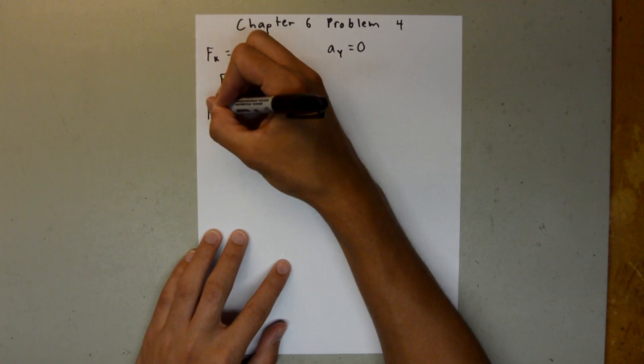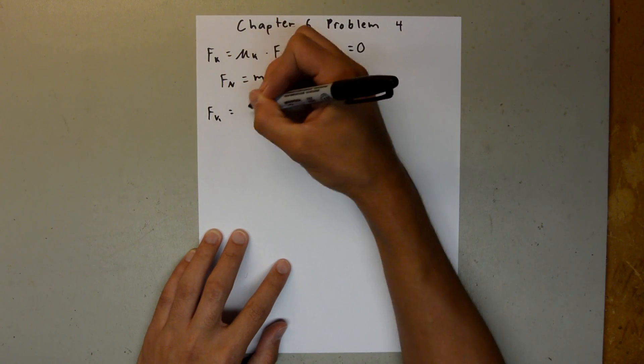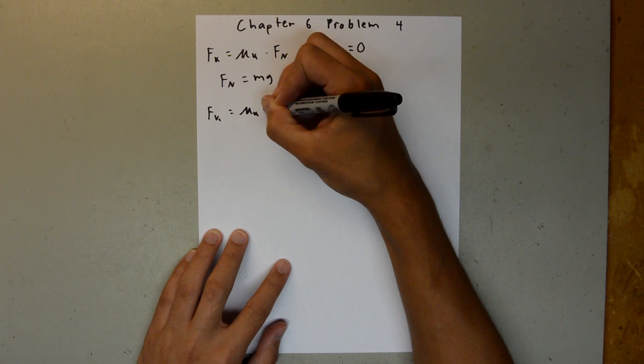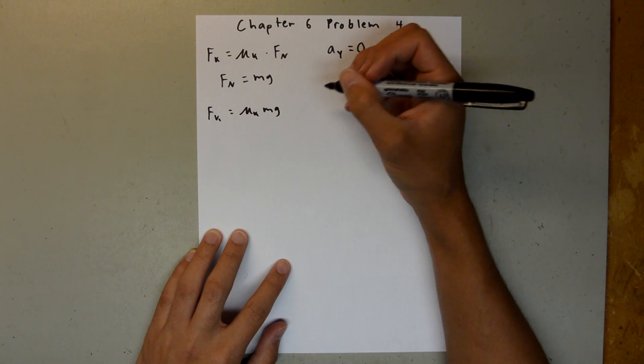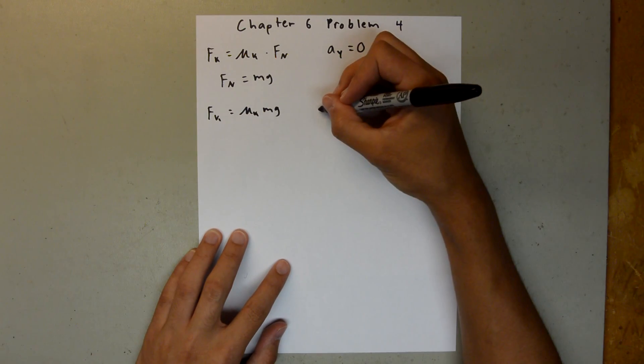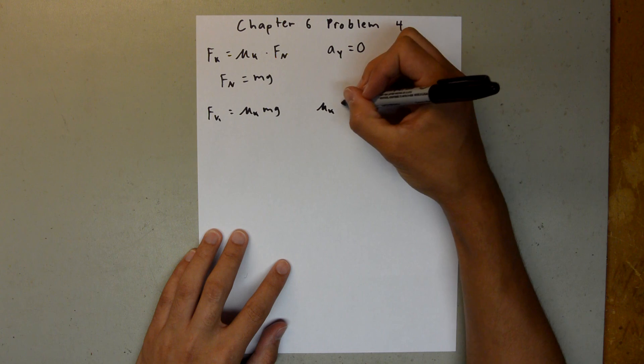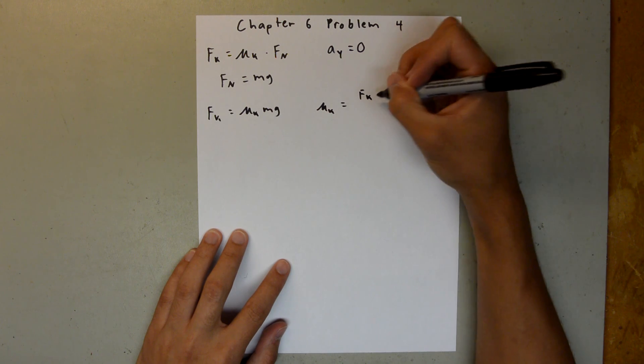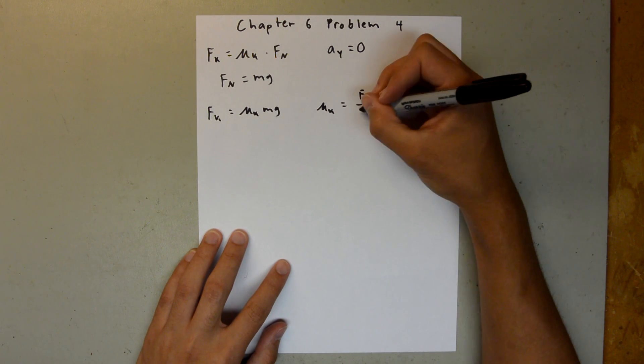So, we can say the force of kinetic friction is equal to mu k mg. And so, we can rearrange this to solve for the coefficient of kinetic friction, and say mu k is equal to the force of kinetic friction over mg.